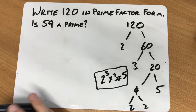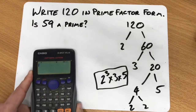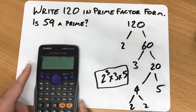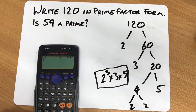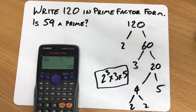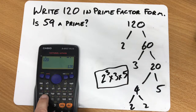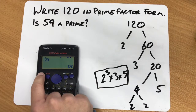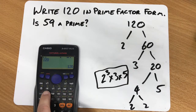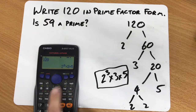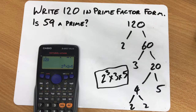We can do it a bit quicker though if we use our scientific calculator. If we type in our target number 120 and press equals, then look just above this button where it says FACT — F-A-C-T — for factorizing. If I press SHIFT and Factorize, it will do it in prime factor form straight away.